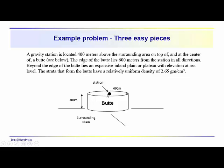We've got a gravity station. In this case, it's located 400 meters above a surrounding plane. We could assume it's at sea level or we could use this as our datum. The edge of the butte extends out 600 meters from the station location in all directions. So we have this idealized circular butte.